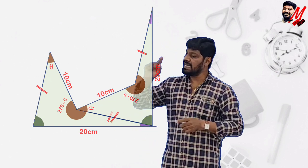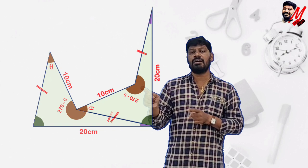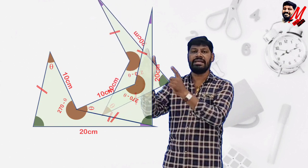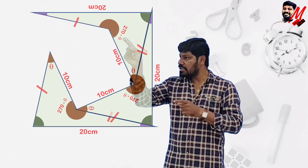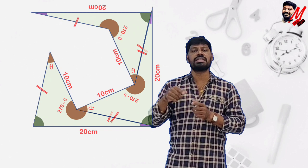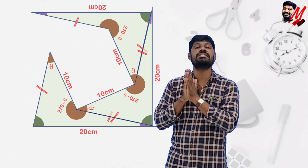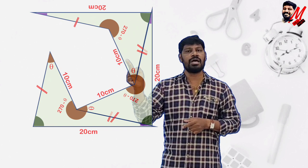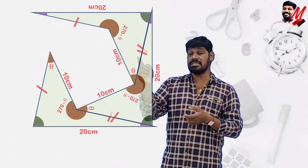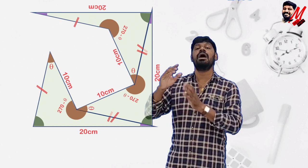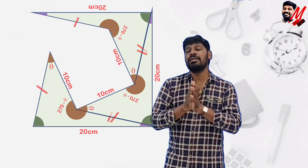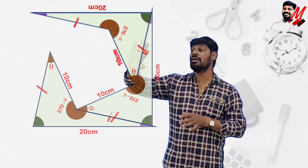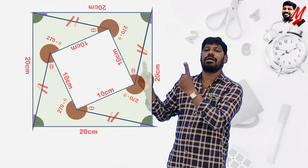We then take another replica, rotate it 90 degrees, and place it so its equal sides coincide with the previous piece. This again produces a 90-degree corner with length 10. Finally, we take a fourth replica and rotate it 90 degrees to complete the arrangement.